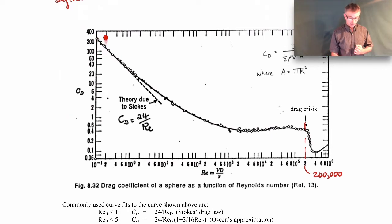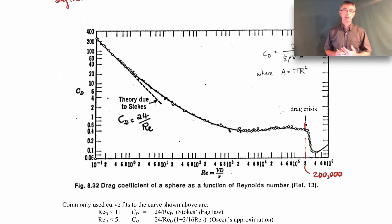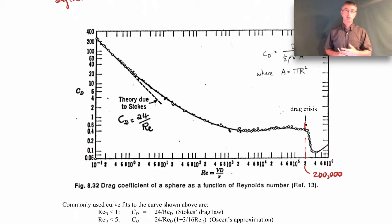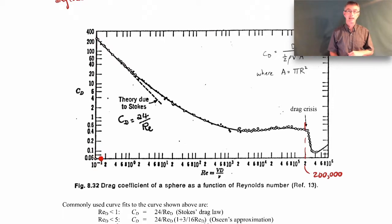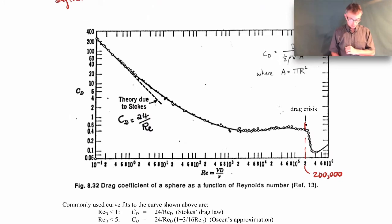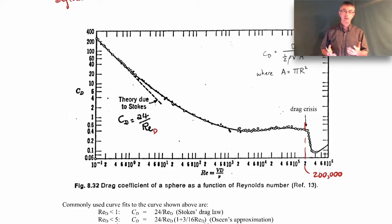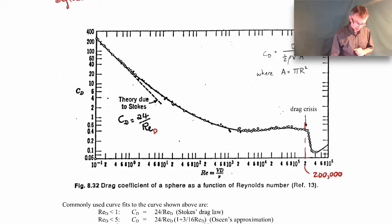Down at low Reynolds numbers, you have creeping flow or Stokes flow, where viscous forces really dominate. The Reynolds number is a ratio of characteristic inertial force to characteristic viscous force — this is the regime of protozoa and bacteria. In this region, the drag coefficient has an analytical value: CD equals 24 over the Reynolds number based on diameter. You can see the experimental data matches that pretty well.